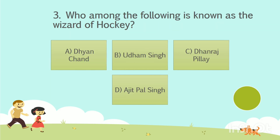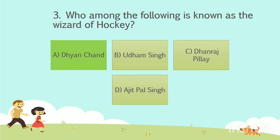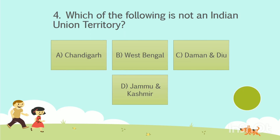Question No. 3. Who among the following is known as the Wizard of Hockey? Option A: Dhyan Chand. Option B: Udham Singh. Option C: Dhanraj Pillai. Option D: Ajit Pal Singh. Your time starts now. The answer is Option A, Dhyan Chand. To the 4th question now.